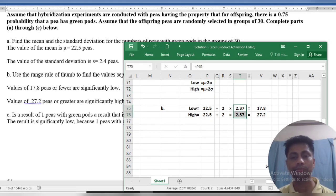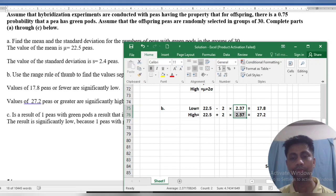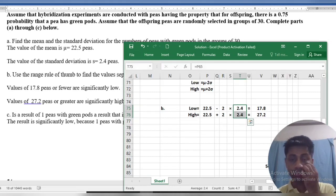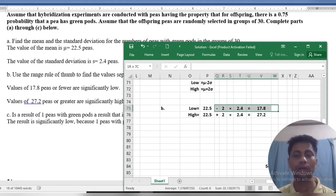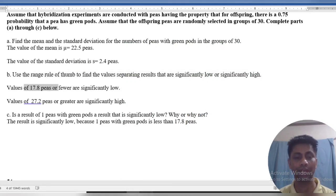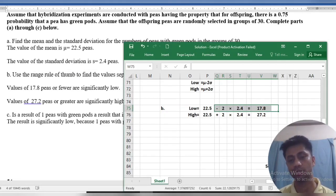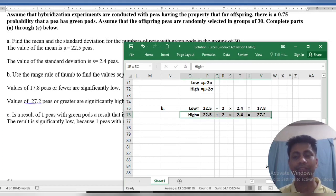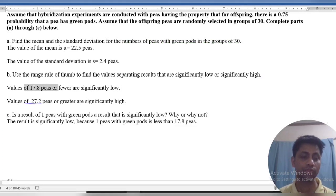The result is mu minus 2 sigma equals 17.8. Look here, 17.8. And high is 27.3.